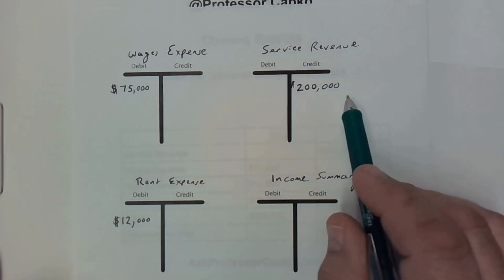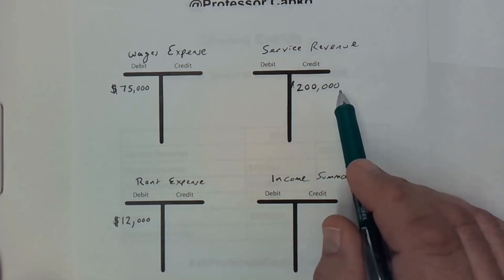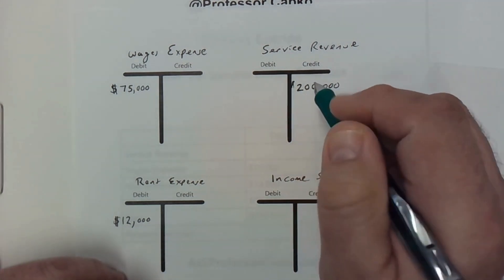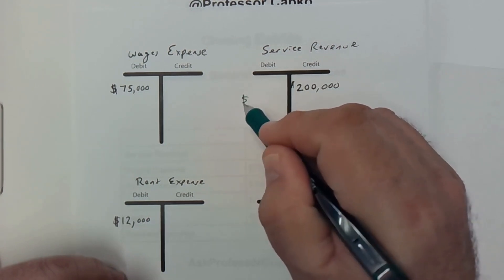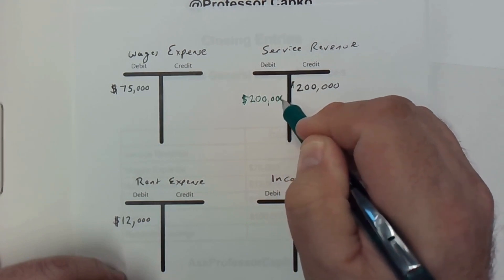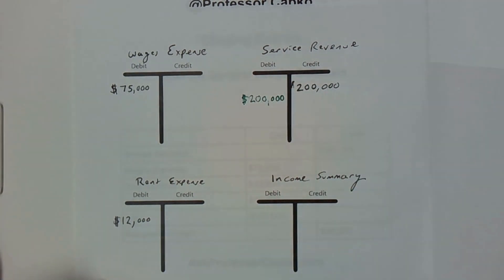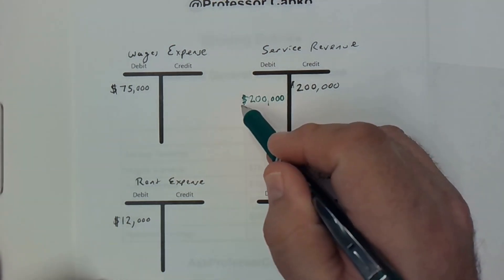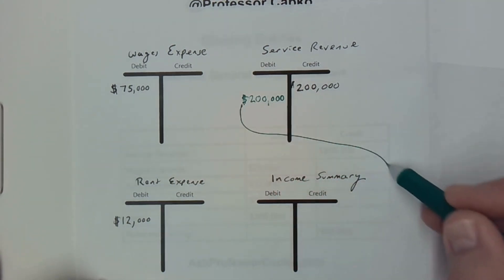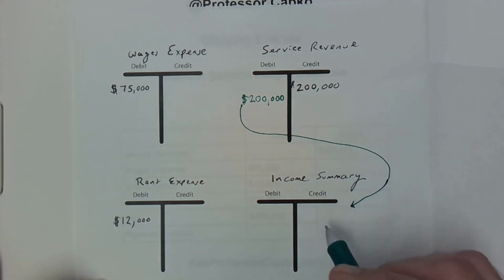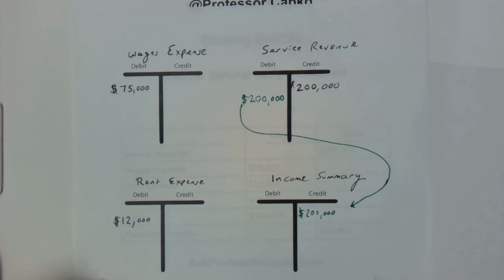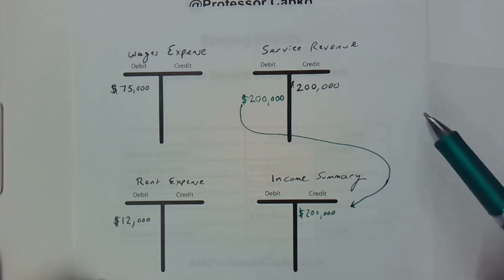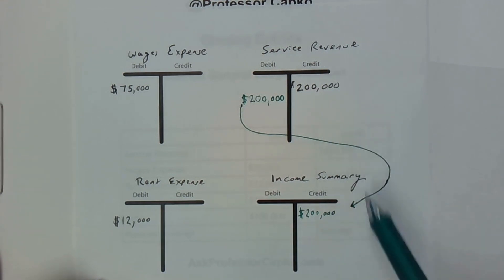Let's start with the service revenue account. We have a credit balance of $200,000, so since it's a credit I need to do the opposite — I'm going to debit $200,000 to close that account out, zeroing it out at the end of the accounting period. Since I have a debit here I need an offsetting credit, and that's going to be income summary — so I'm crediting income summary for $200,000. The debit is to service revenue, the credit is to income summary. This could be any kind of revenue — rent revenue, sales revenue — this is just an example.